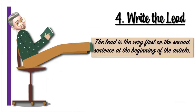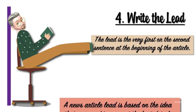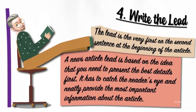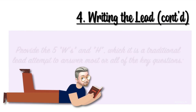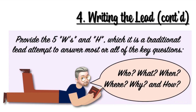The next step is how to write a lead. The lead is the very first or second sentence at the beginning of the article. A news article lead is based on the idea that you need to present the best details first. It has to catch the reader's eye and neatly provide the most important information. In the lead, you need to provide the five W's and H, which is a traditional lead attempting to answer most or all of the key questions: who, what, when, where, why, and how.